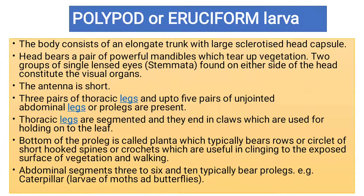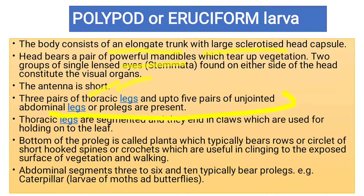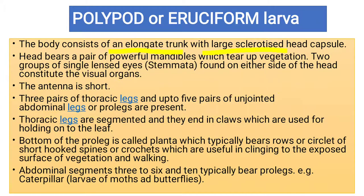Lastly, we will discuss the polypod or eruciform larvae. Polypod larvae have an elongated shape with large sclerotization on the head and functional mandibles for tearing vegetation. Caterpillars belong to this type, and they are pests of vegetation. The antennae are short, and there are three pairs of thoracic legs. A unique point is that abdominal legs are also present, called pro-legs. Thoracic legs are always segmented with claws to grip leaves.